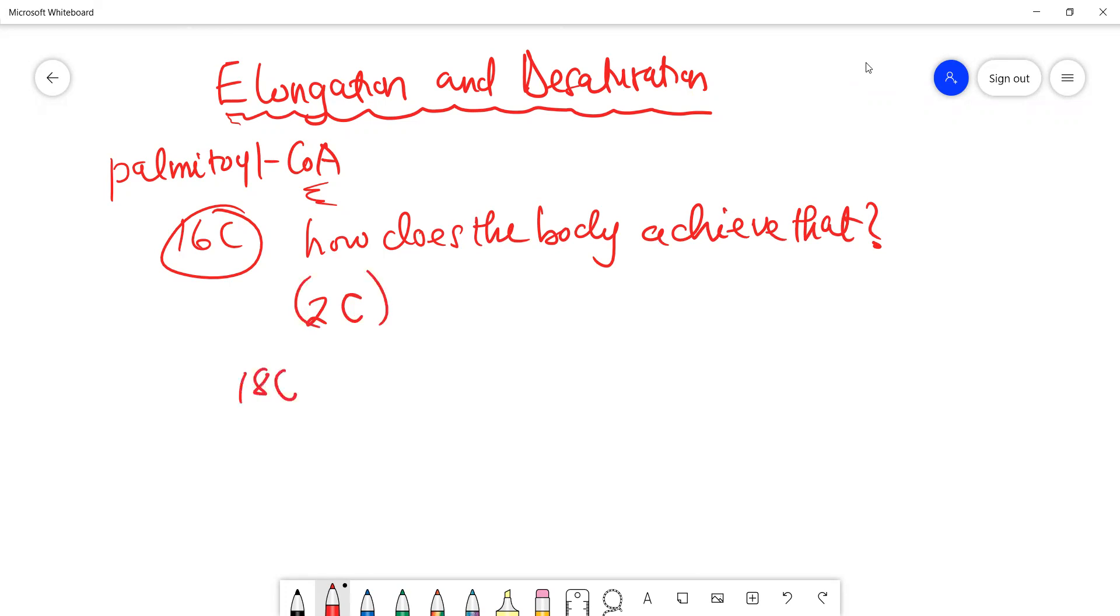So we have an 18-carbon fatty acid that we obtain from palmitoyl, which we've come to know as stearic acid - 18 carbons.